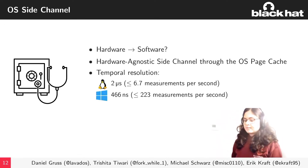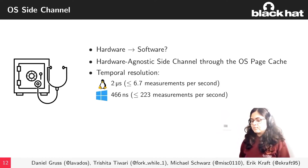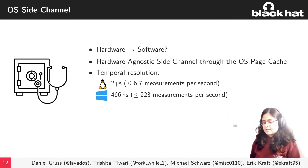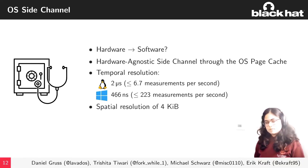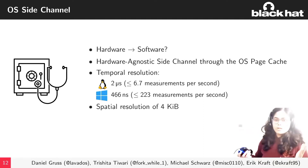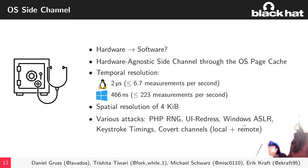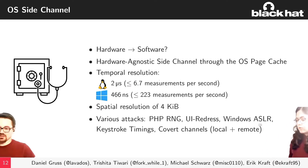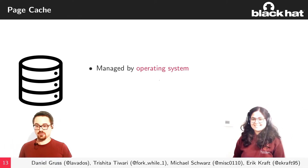This page cache side channel has a temporal resolution of about 2 microseconds, yielding up to 6.7 measurements per second on Linux and 466 nanoseconds, about 233 measurements per second, on Windows. The spatial resolution is one page — 4 kilobytes. Through this, we can perform very different types of attacks: PHP random number generator attacks, UI redressing attacks, breaking ASLR, keystroke timing attacks, and covert channels.